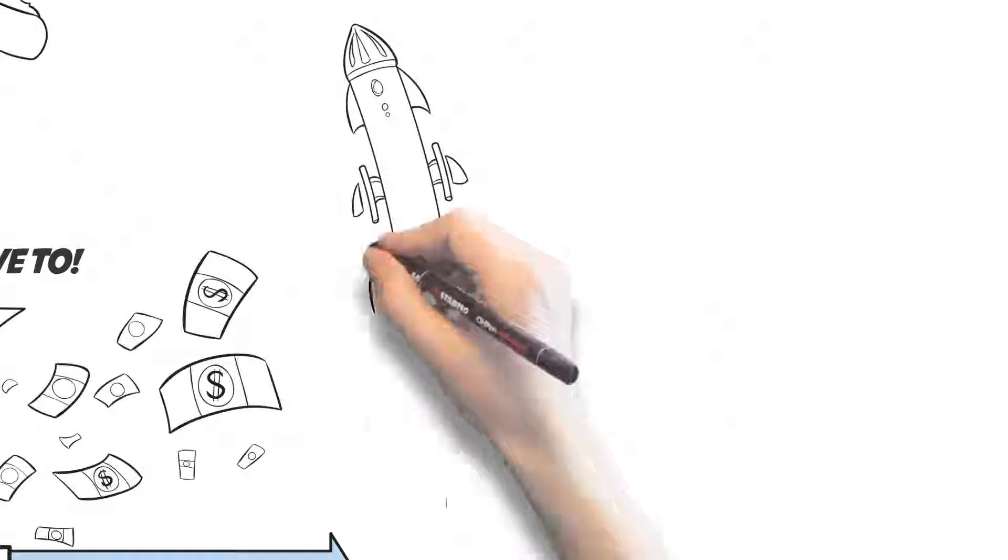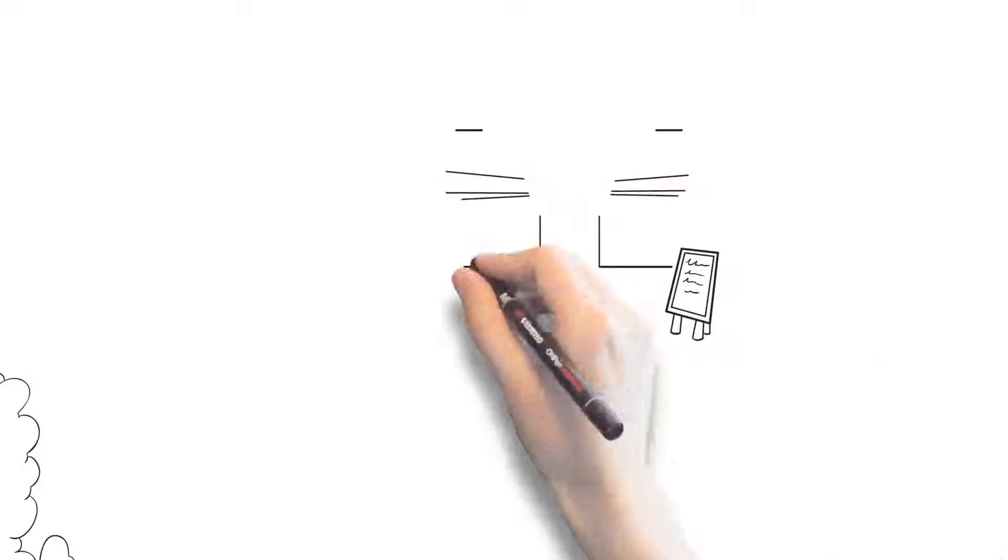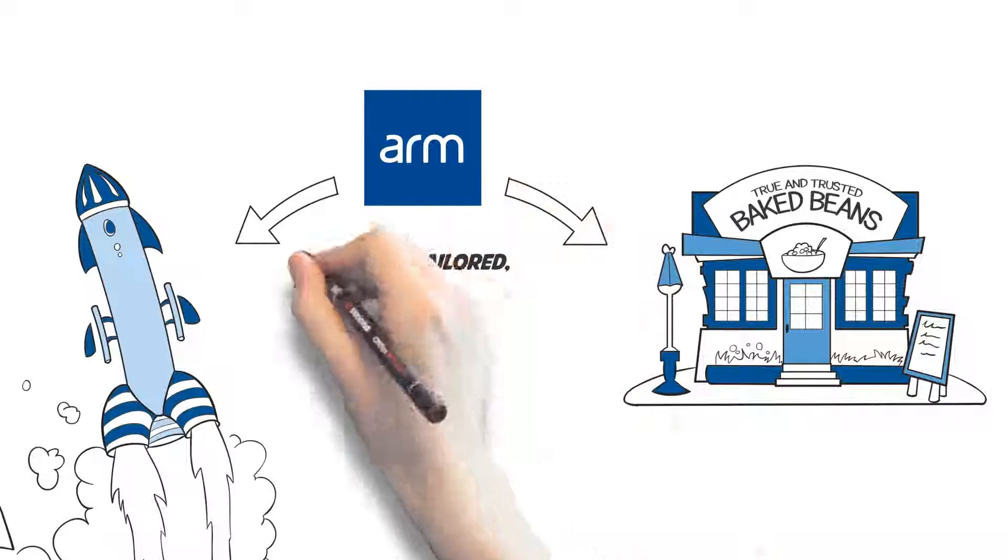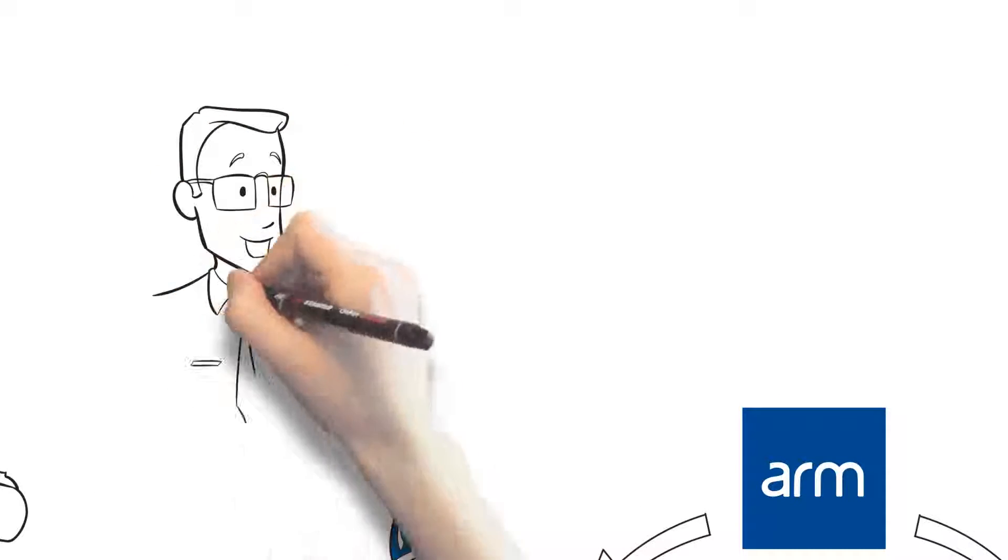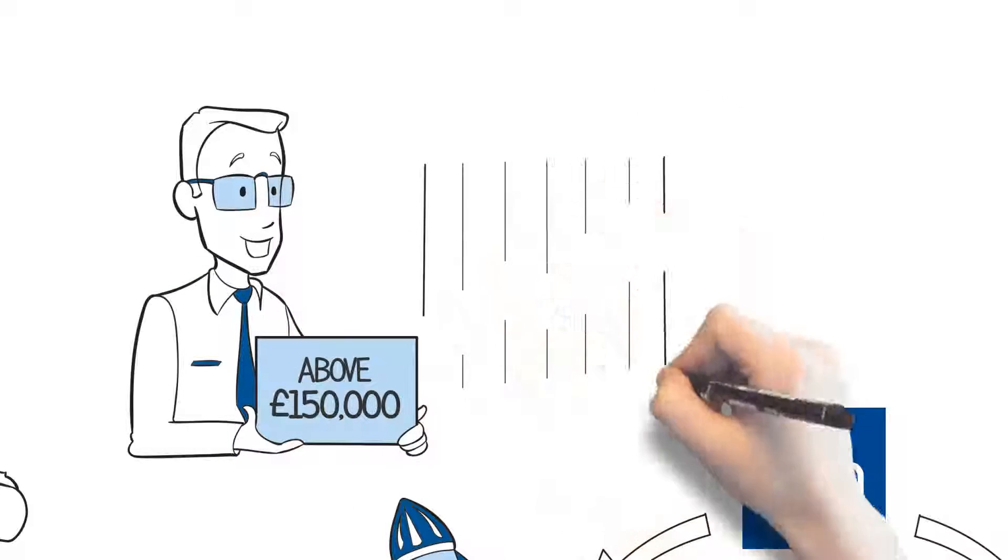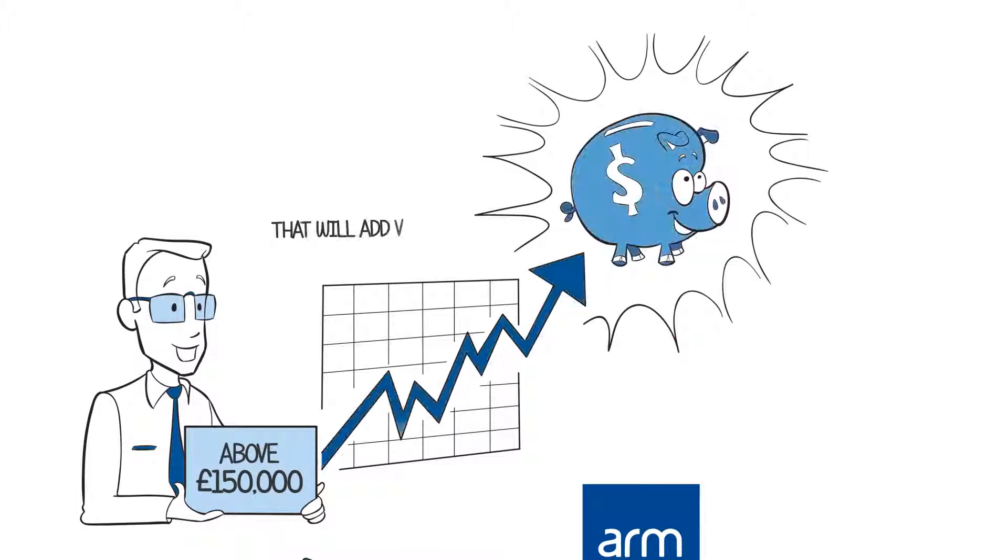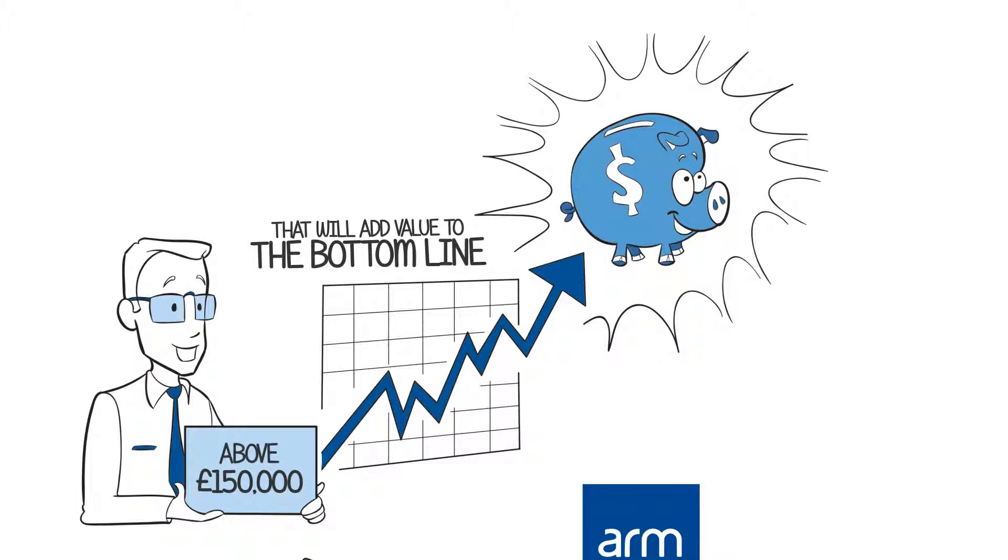Whether you are in high-tech satellite launches or true and trusted baked beans, we can provide a fully tailored, turnkey solution just for you. If your company insurance premiums are above £150,000, you could easily qualify for a transformation that will add value to the bottom line for years to come.